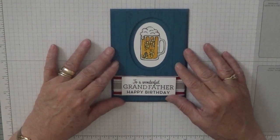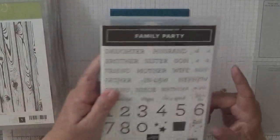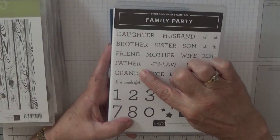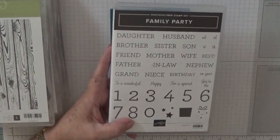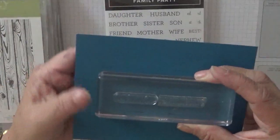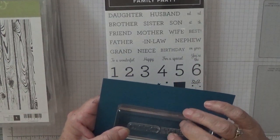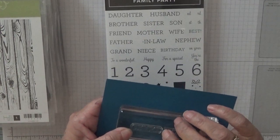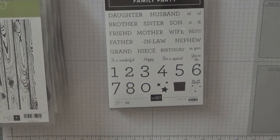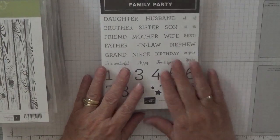To make this card I've used the stamp sets Family Party for the saying 'to a wonderful' and then 'grandfather.' I've put the stamps together, cutting off the excess silicone by the G and the R so they would go closer together. If you do that, you just lose your rights to exchange the stamp with Stampin' Up because you've destroyed it yourself.